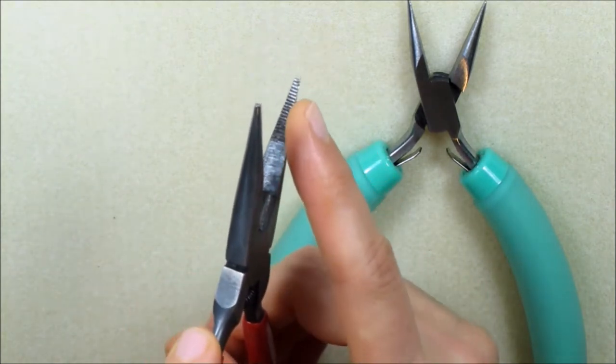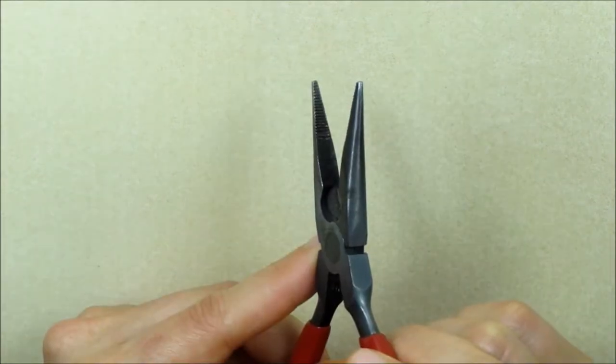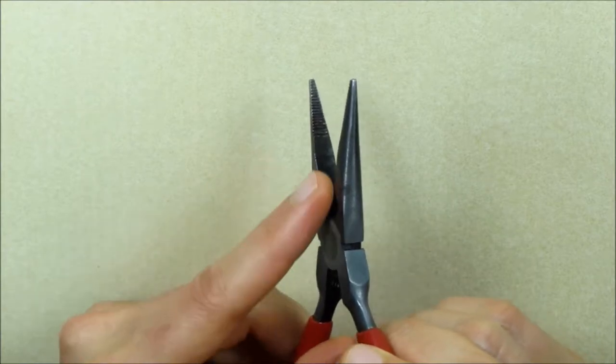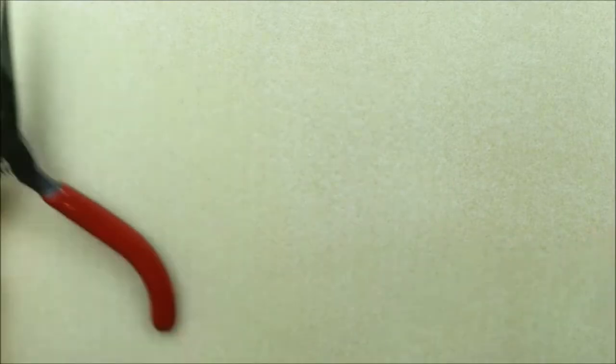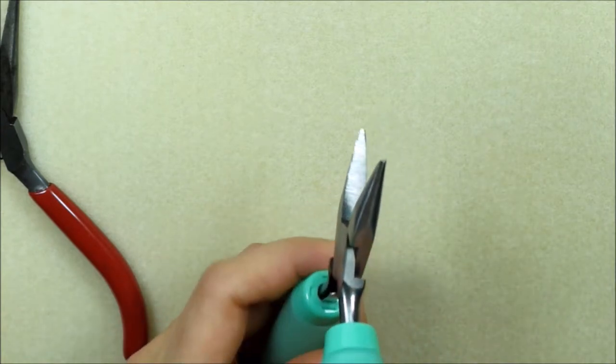Using pliers that have toothy jaws is a surefire way to mar the smooth appearance of your jump rings. Pliers with a smooth inside surface have a much smaller chance of damaging your metals while you work.